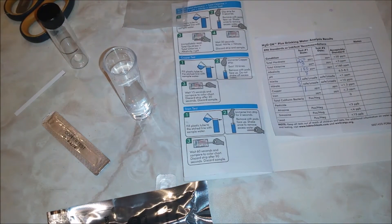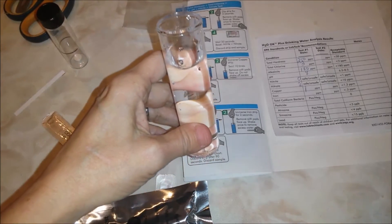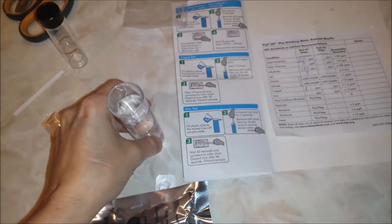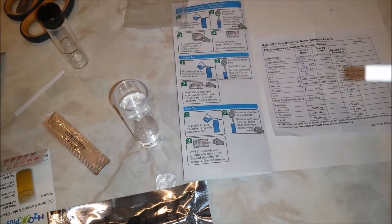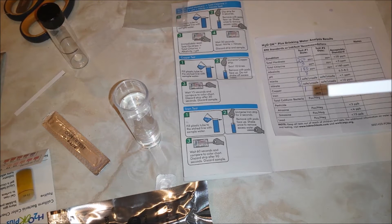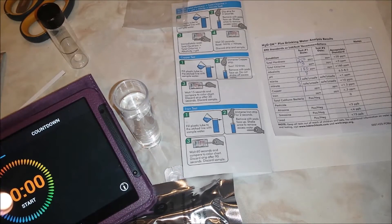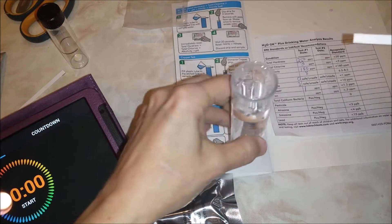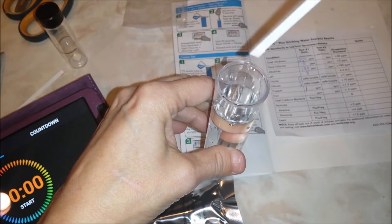Next test is for iron. Again, we fill our plastic tube to the etched line. This is new water. We discard the water from the previous test. They want us to open the strip from the iron package - you sort of open it like a Band-Aid. They want us to dip the strip, immerse it for 2 seconds, remove with the pads face up, shake once to remove excess water, and wait 60 seconds.